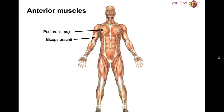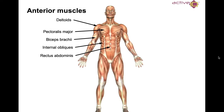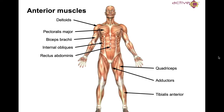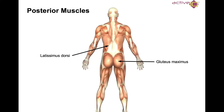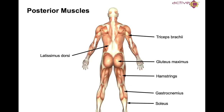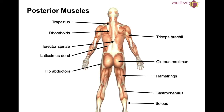Anteriorly, you've got the pectoralis major, biceps brachii, rectus abdominis, deltoids, internal obliques, quadriceps, adductors, tibialis anterior, external obliques, upper trapezius, and iliopsoas. Posteriorly — meaning the back — you've got the latissimus dorsi, gluteus maximus, hamstrings, gastrocnemius, the lats, triceps brachii, hip adductors, trapezius, rhomboids, and erector spinae.